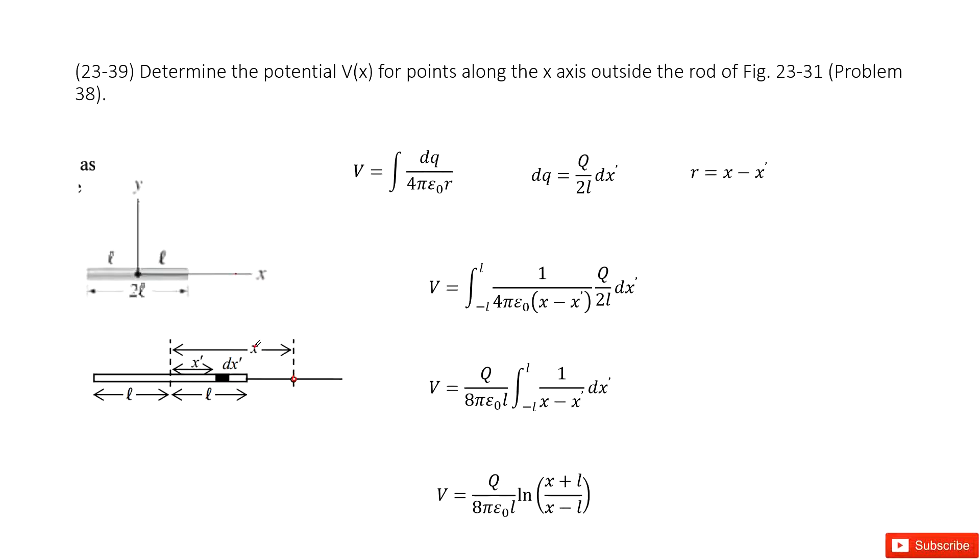How can we do that? We can cut this rod in infinity small fractions. For example, this is one small fraction. The charge it carries is dq. And then divided by 4 pi epsilon naught r. This r is the distance from this point charge with the location we calculated, p.